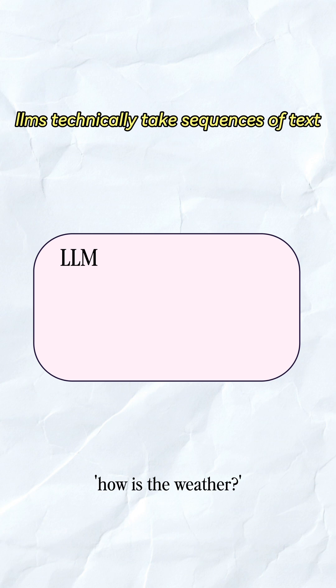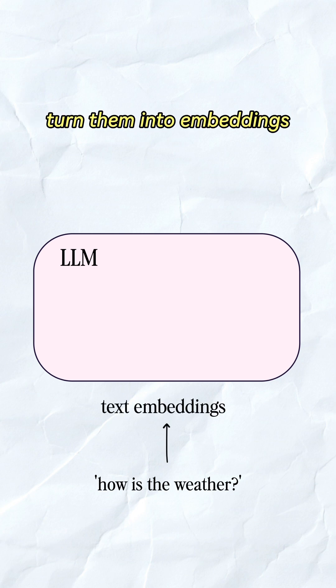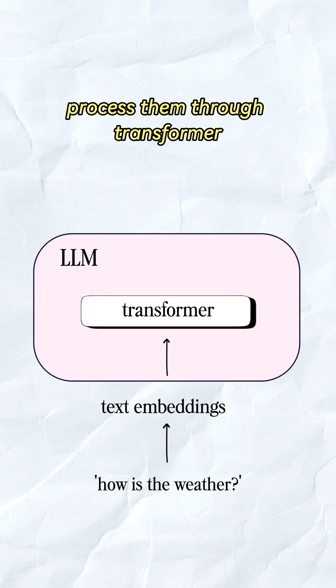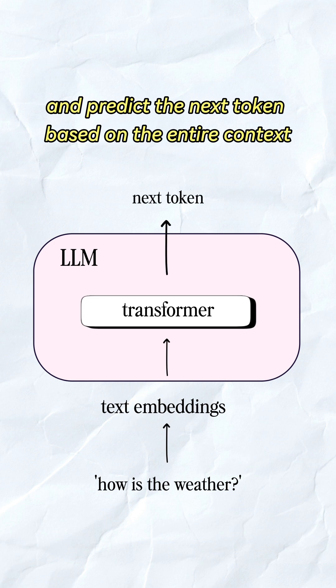LLMs technically take sequences of text, turn them into embeddings, process them through transformer, and predict the next token based on the entire context.